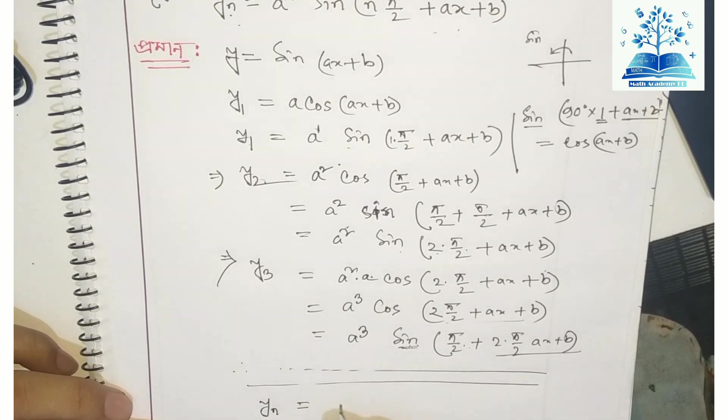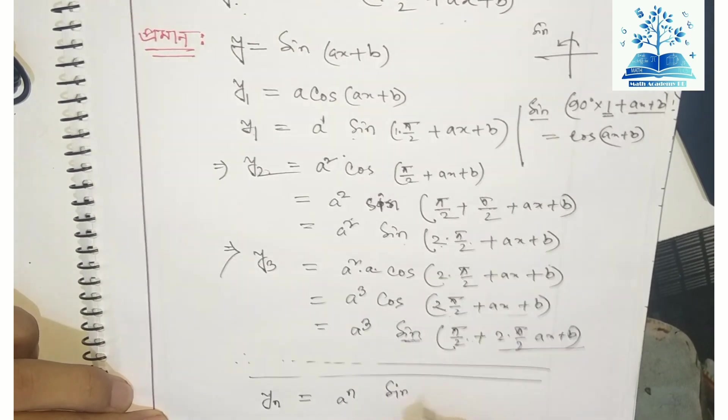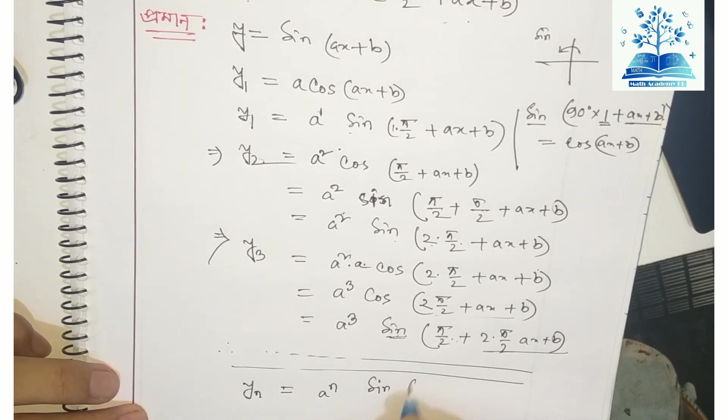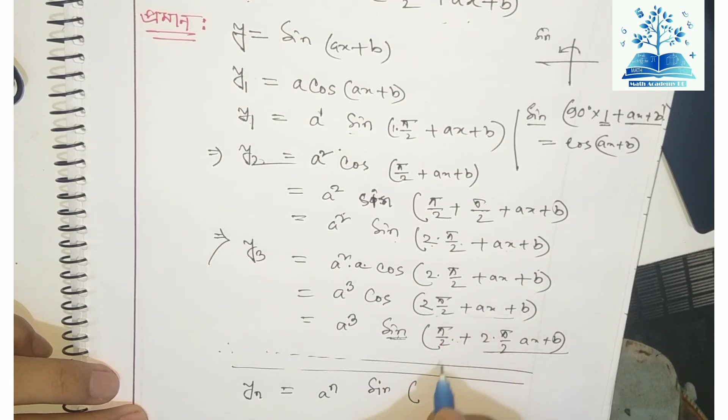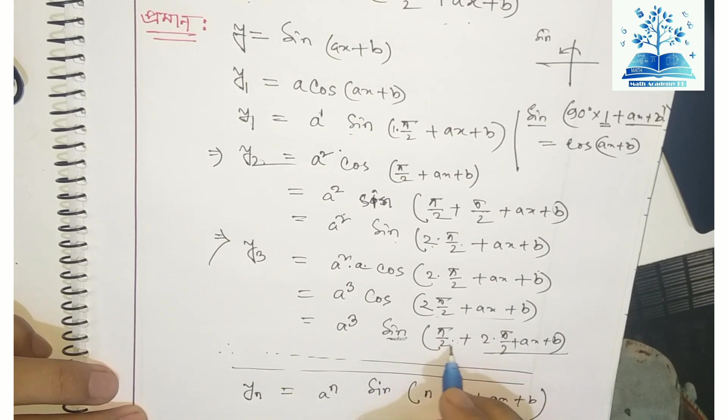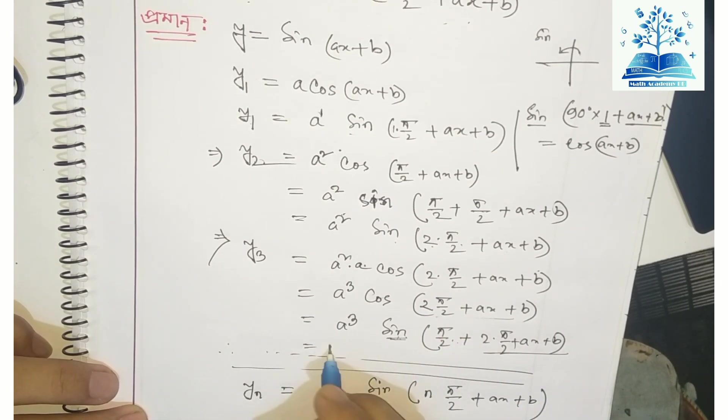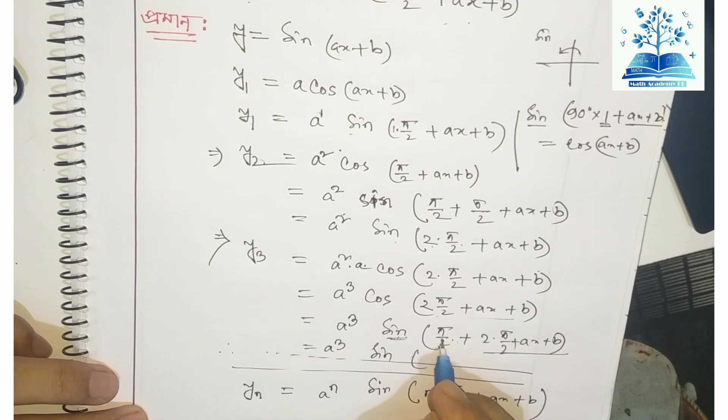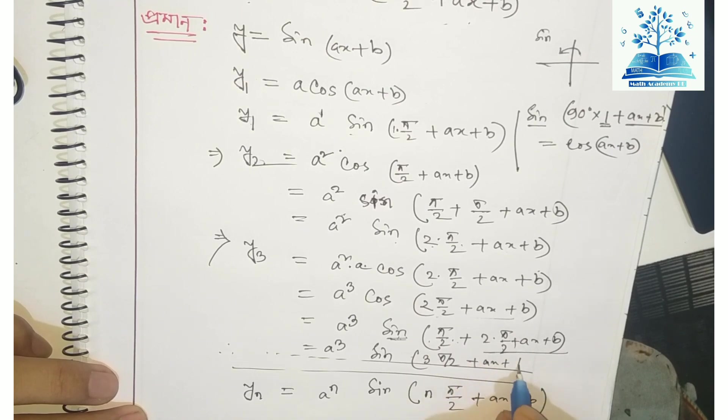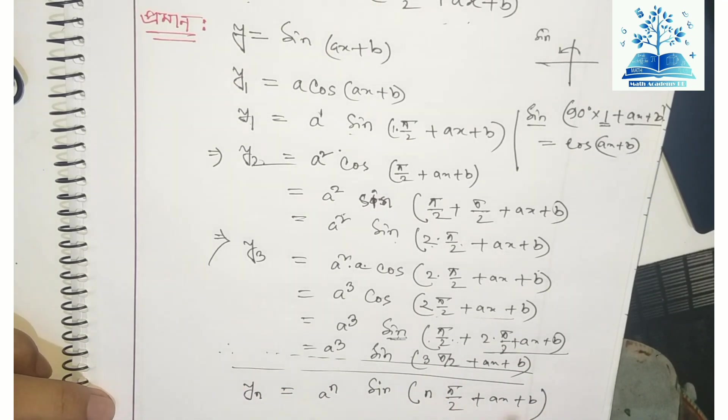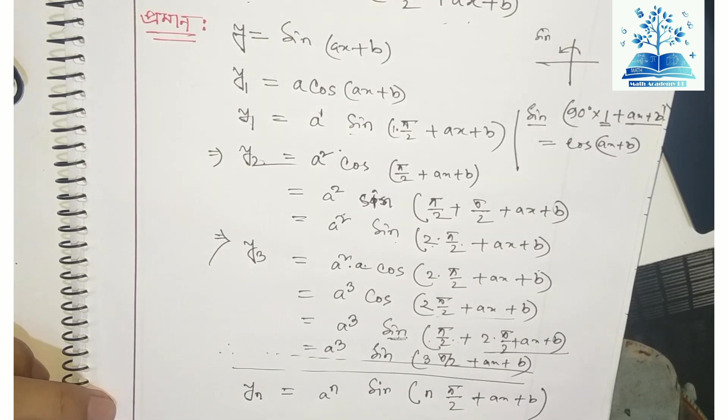Therefore, yₙ equals aⁿ sin(n·π/2 + x + b). This is the general formula. We can write yₙ = aⁿ sin(nπ/2 + x + b).